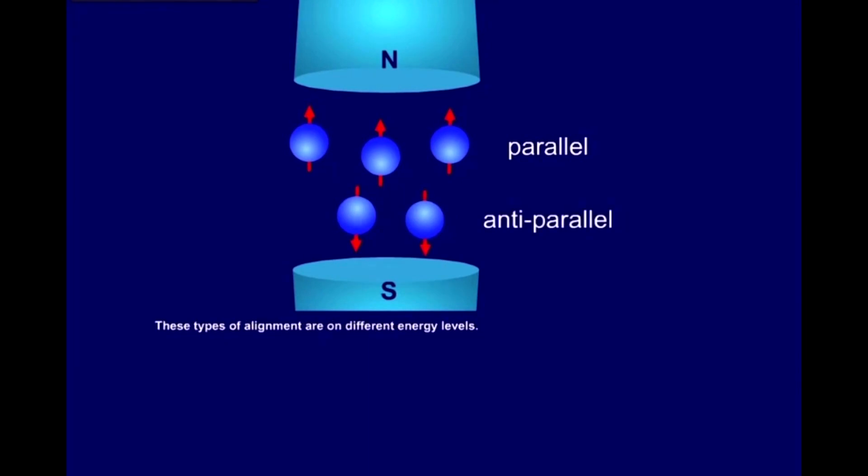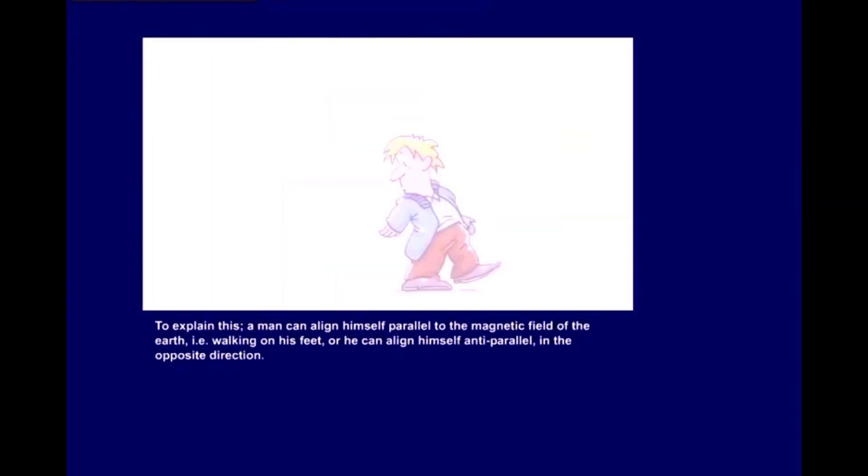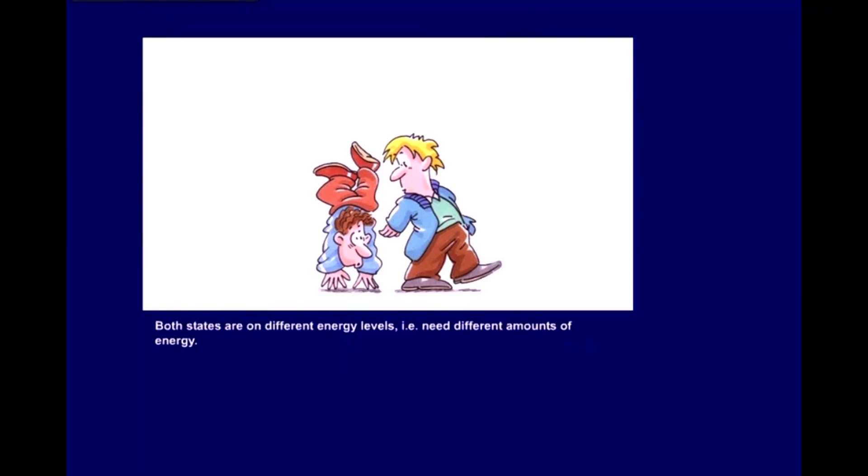These types of alignment are on different energy levels. To explain this, a man can align himself parallel to the magnetic field of the Earth. In other words, walking on his feet. Or he can align himself anti-parallel, in the opposite direction. Both states are on different energy levels, needing different amounts of energy. Walking on one's feet is undoubtedly less exhausting, takes less energy than walking on one's hands.